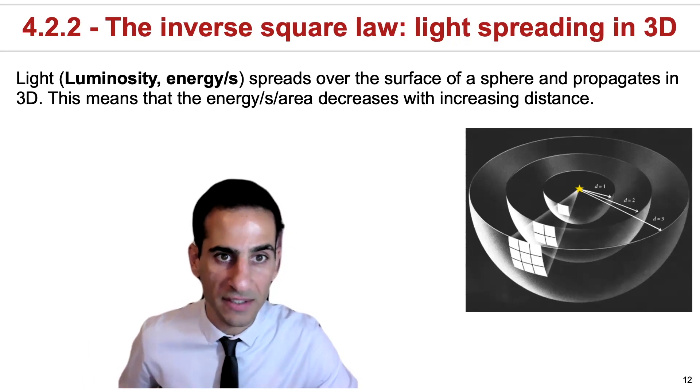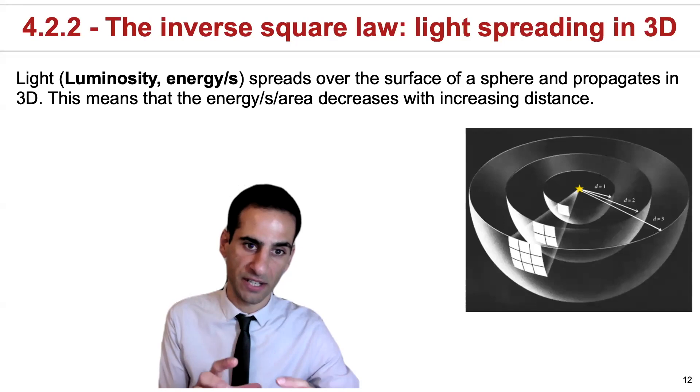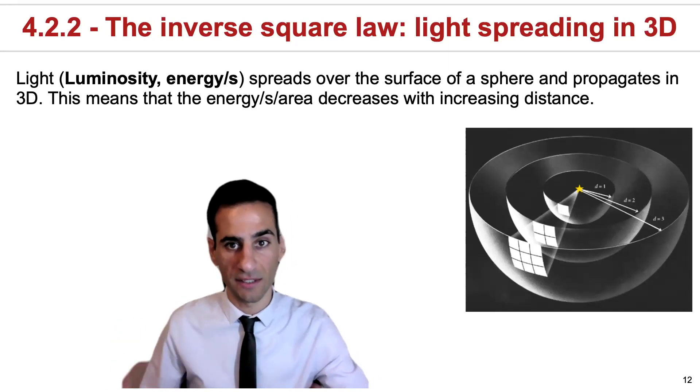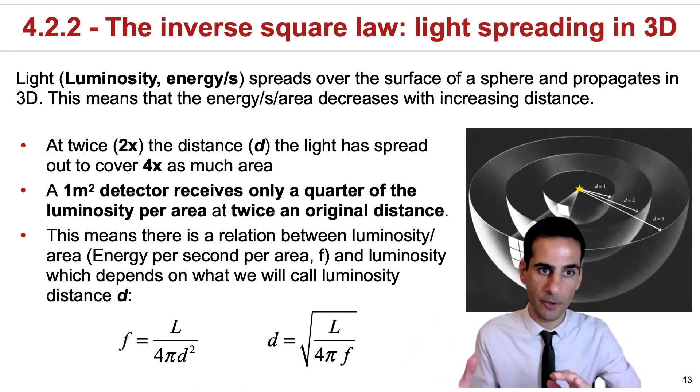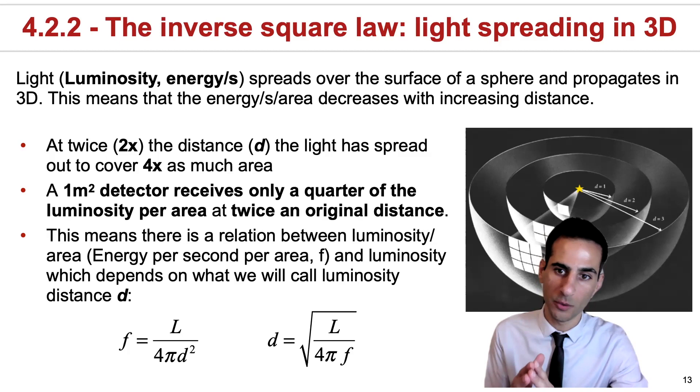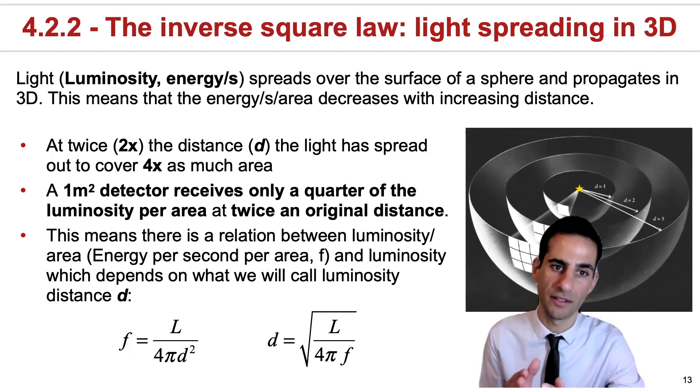This means that this energy per second, especially the energy per second we will get on a specific area, will be decreasing as the distance increases. Now because of the way that energy propagates, when you go to a distance that's twice as far, you're actually retrieving an energy per second per area that is four times as small.